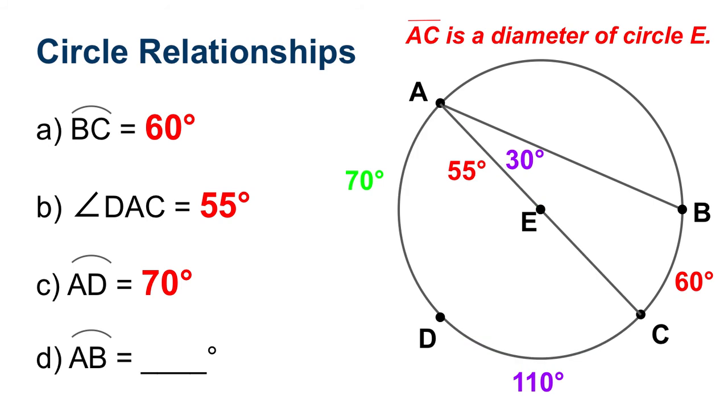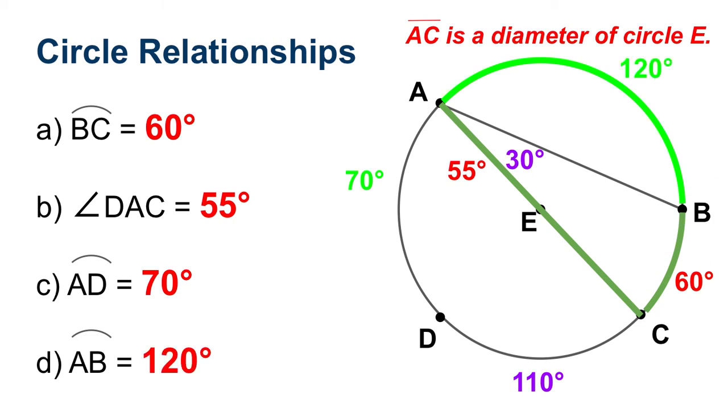Next on the list is arc A, B. So we're going to use similar thinking for this. We know that A, C is a diameter of the circle. So halfway around the circle is going to be 180. If we already know that this arc over here is 60, we've got to figure out what's left to get to 180. And that would be 120.